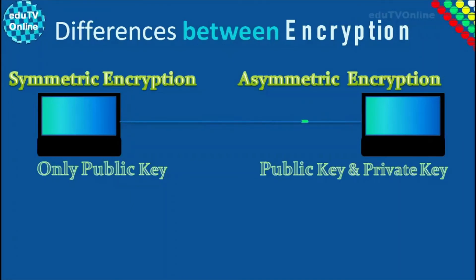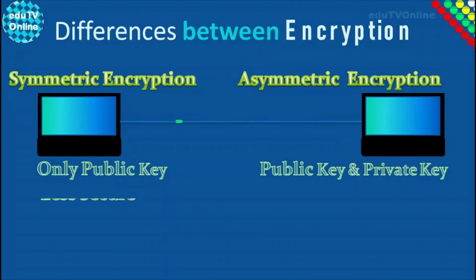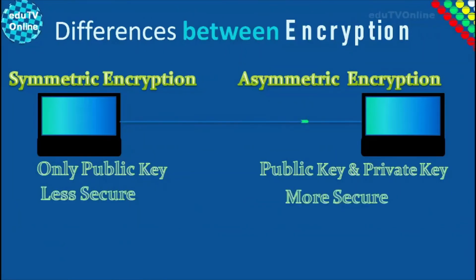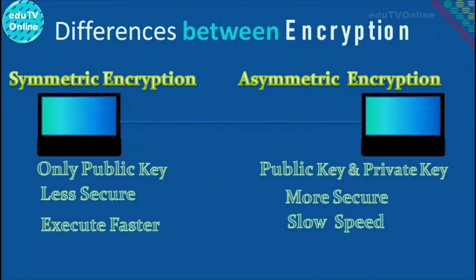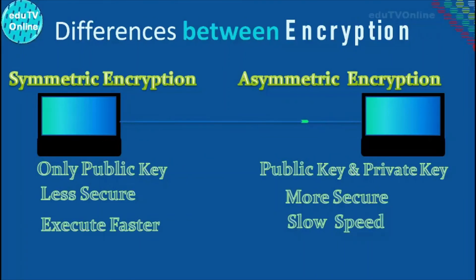Asymmetric encryption is considered to be more secure than symmetric encryption, as it uses two keys for the process. Because the algorithm behind symmetric encryption is less complex and executes faster, it is the preferred technique when transmitting data in bulk.